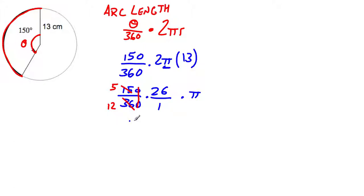Reducing this, because it's getting a little bit messy, I get 5 over 12 times 26 over 1 times π.